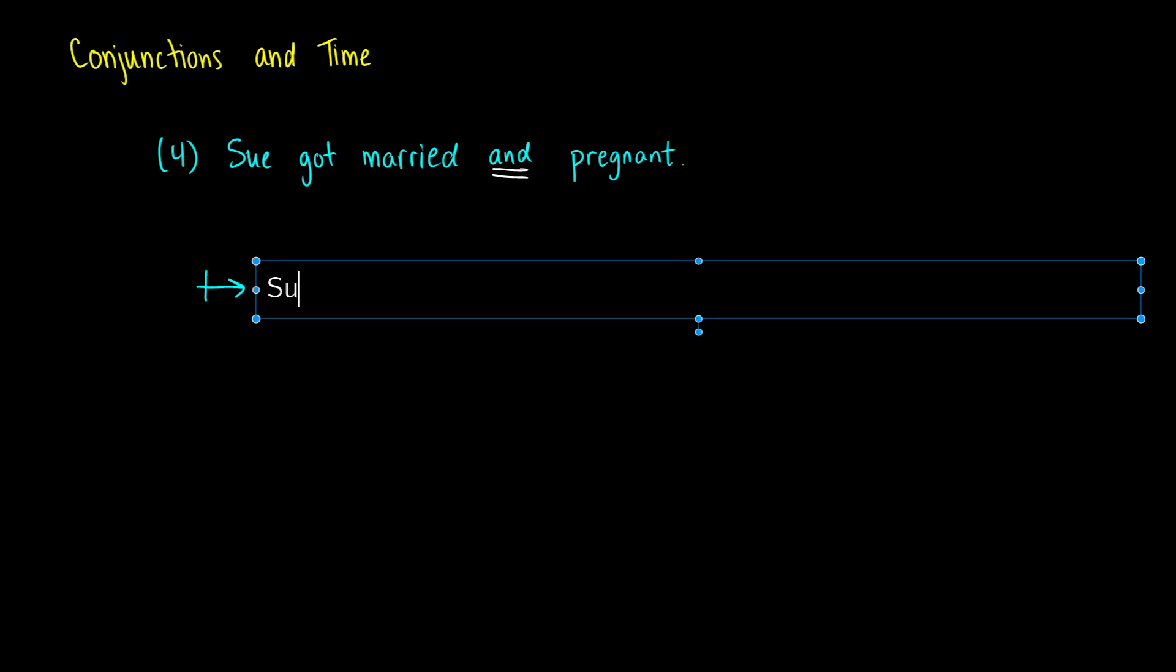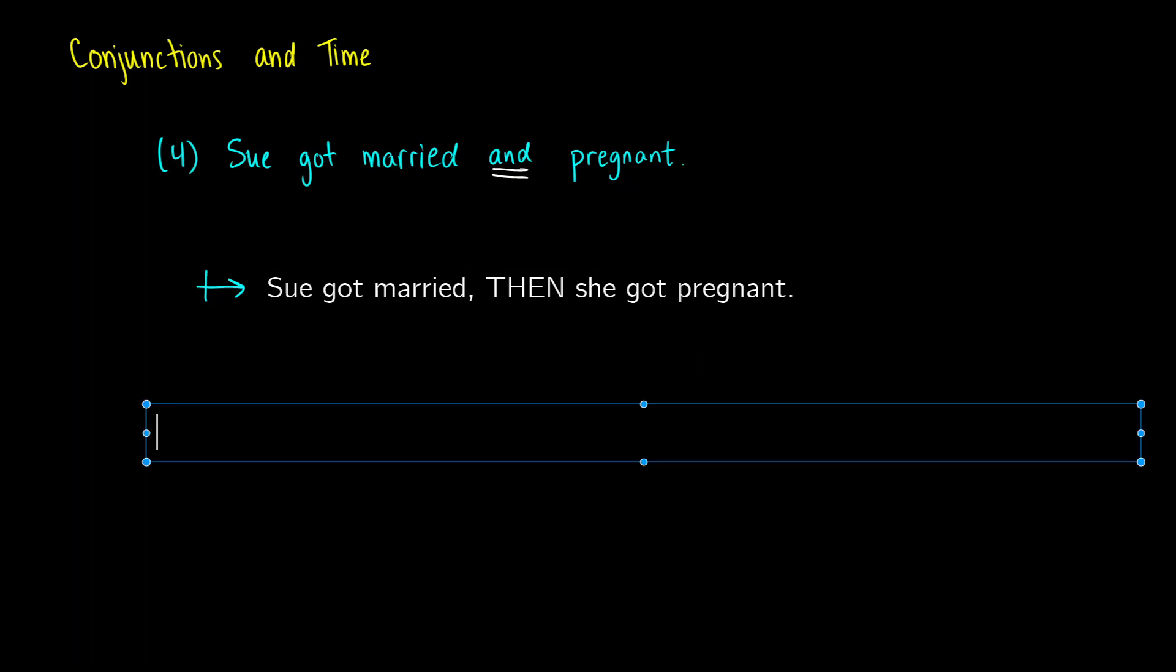then she got pregnant. So this is an expectation based on conversational norms. Now, you can imagine if we change the sentence a little bit. So maybe you can hear it when we change the sentence. Sue got pregnant and married.